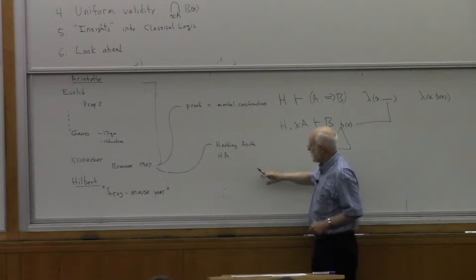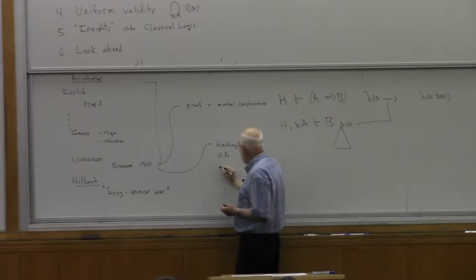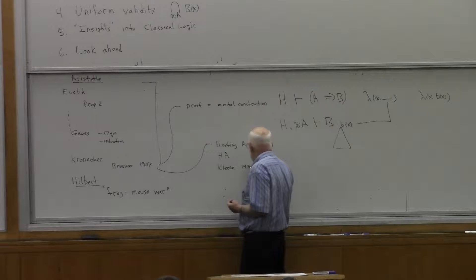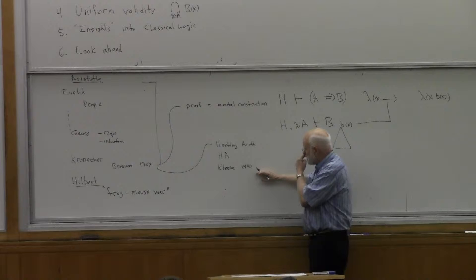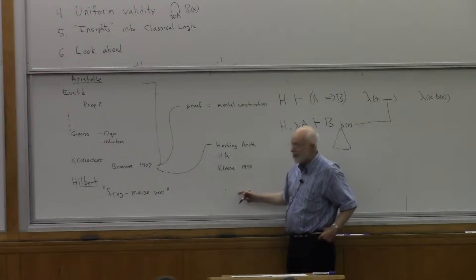Kleene went to learn intuitionism from Heiting in Amsterdam, and he came back with an idea of realizability that you could actually interpret, and that's basically propositions as types. Kleene did this about 1938 or maybe 1940. We don't know exactly when his manuscript was written, but then World War II started and he served in the Navy as an officer, and he wasn't able to do any writing for a long time.